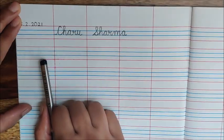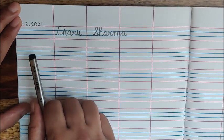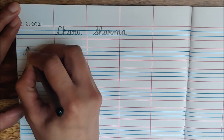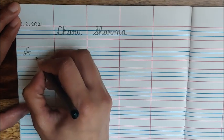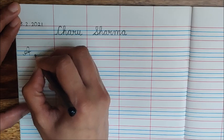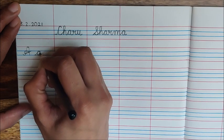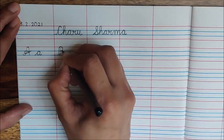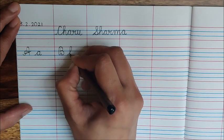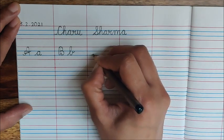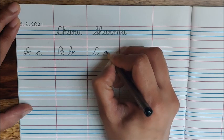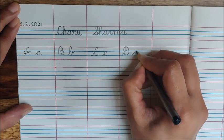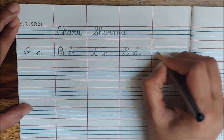You will start writing A to Z from the next line. Write A in the first box. Capital A. And now write its friend, small friend, lowercase a in cursive. A, B, C, D, E.